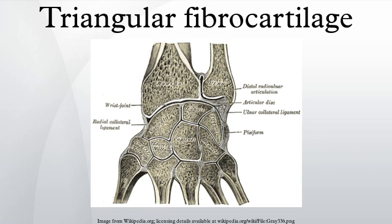The ulnocarpal ligaments consist of the ulnolunate and the ulnotriquetral ligaments. They originate from the ulnar styloid and insert into the carpal bones of the wrist. The ulnolunate ligament inserts into the lunate bone and the ulnotriquetral ligament into the triquetrum bone. These ligaments prevent dorsal migration of the distal ulna. They are more taut during supination, because in supination the ulnar styloid moves away from the carpal bone's volar side.